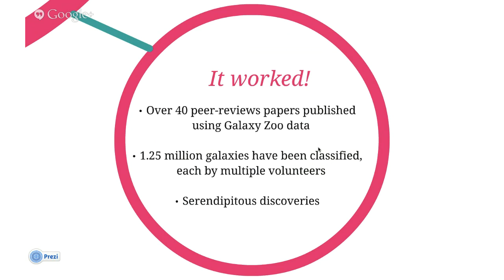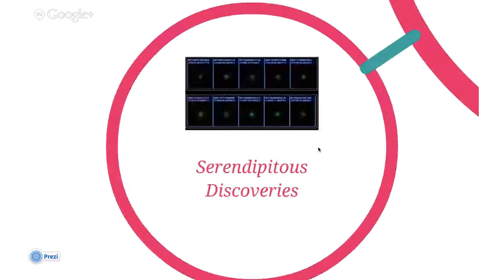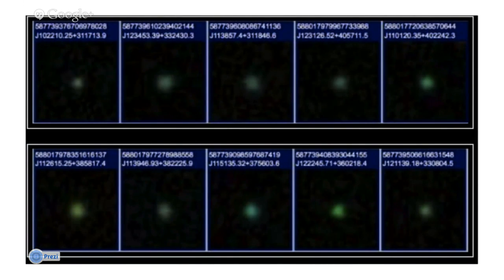What's been even more exciting are the serendipitous discoveries — things we didn't expect to find. These little blobs that look like little green peas turned out to be a new type of galaxy discovered by our volunteers. A volunteer noticed one in an image and posted it in the Galaxy Zoo forum, where volunteers and scientists can interact, asking 'what is this?' The astronomy team initially dismissed it, but that user enlisted other Galaxy Zoo volunteers to create a collection of these objects and presented their findings to the astronomers, who confirmed it was indeed a new type of galaxy.